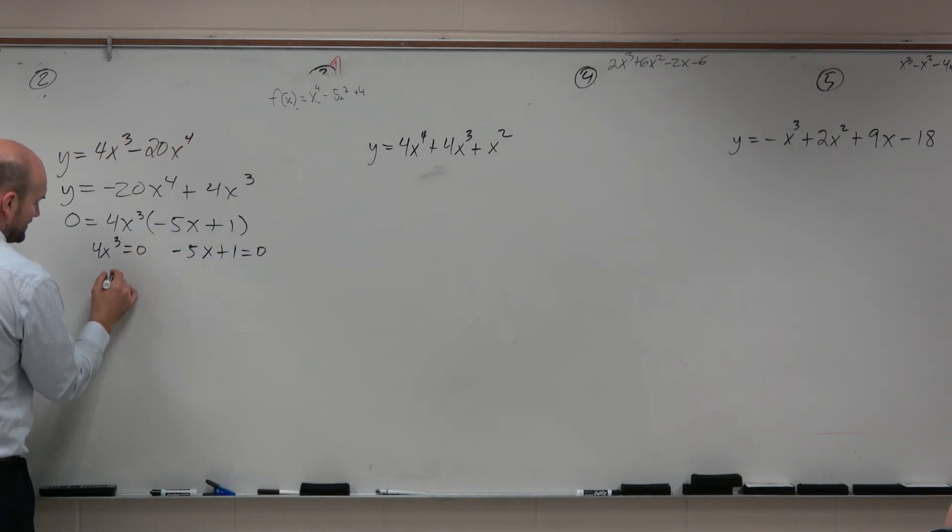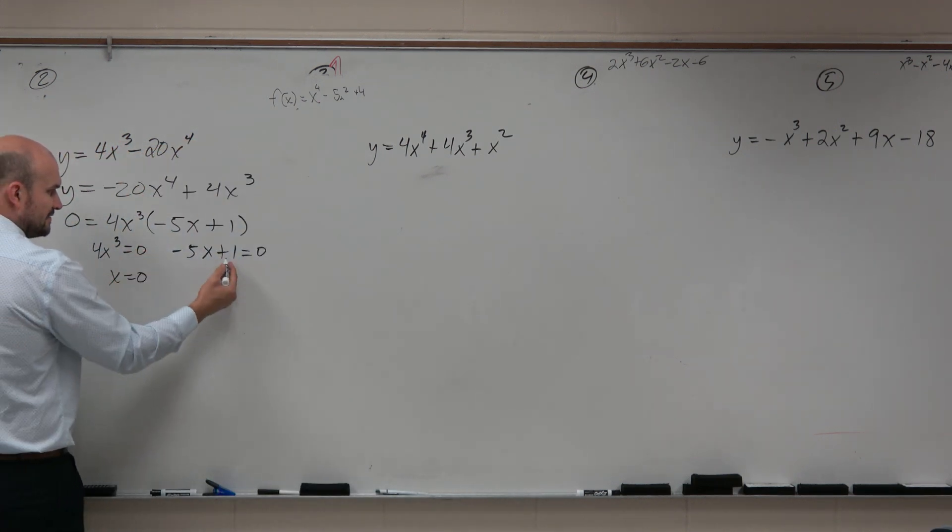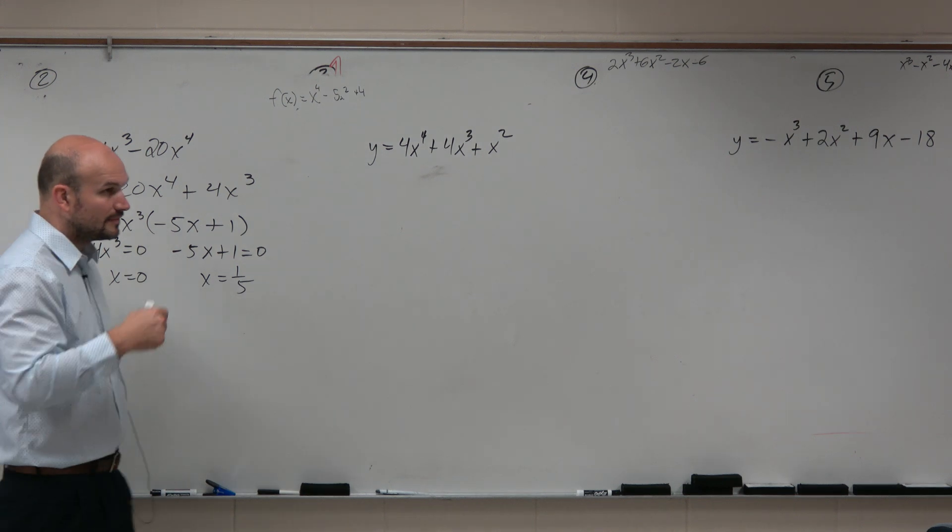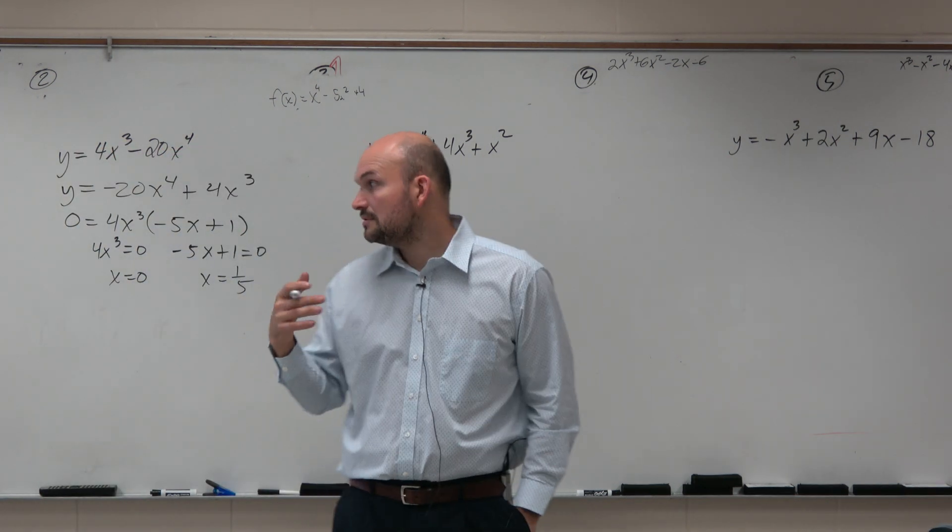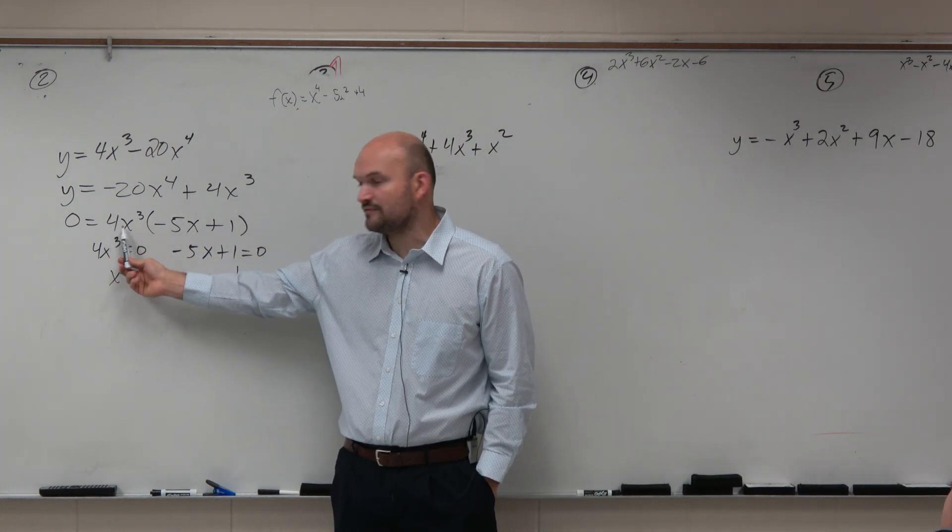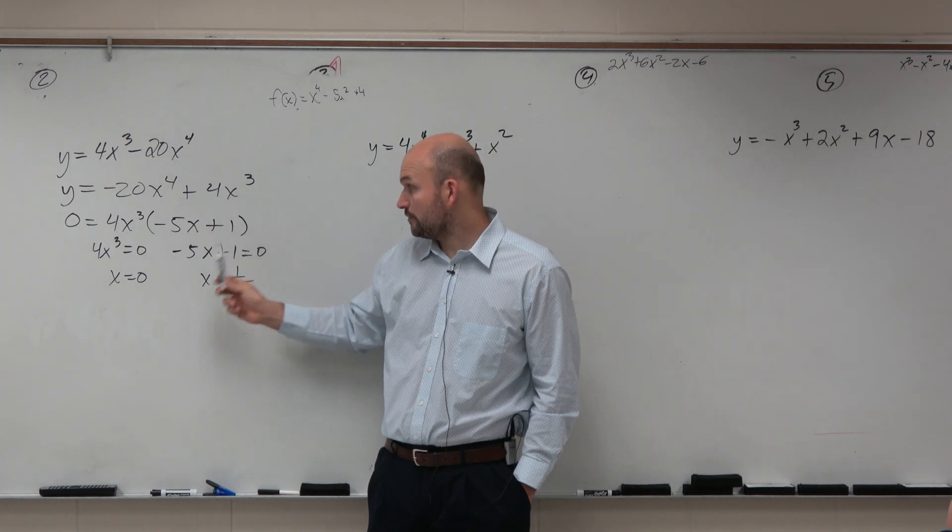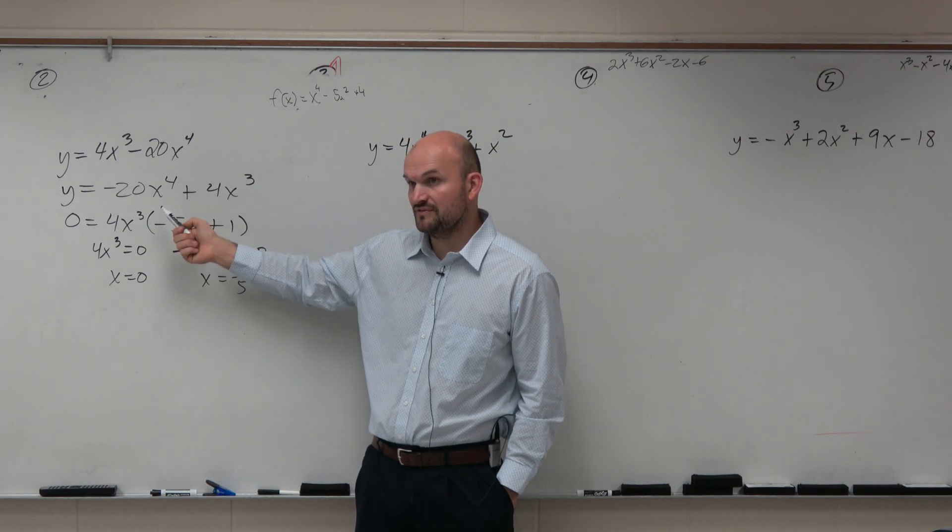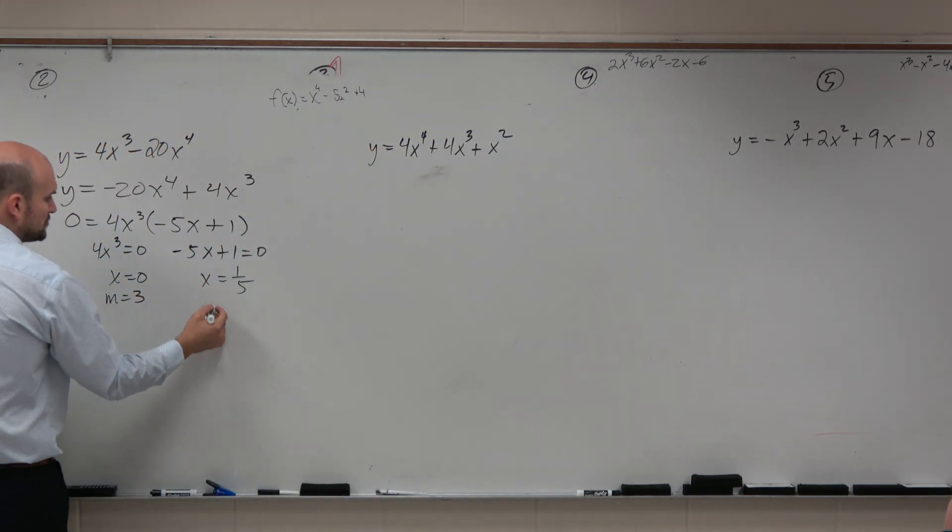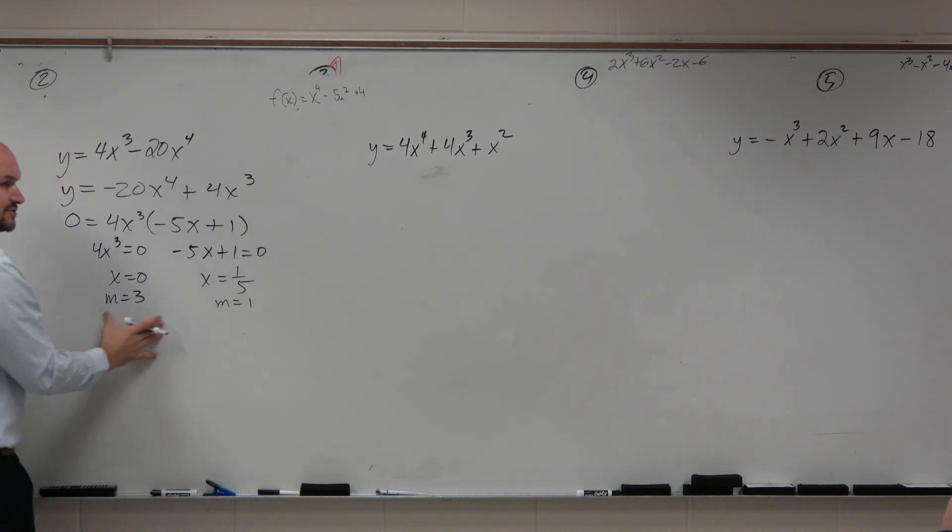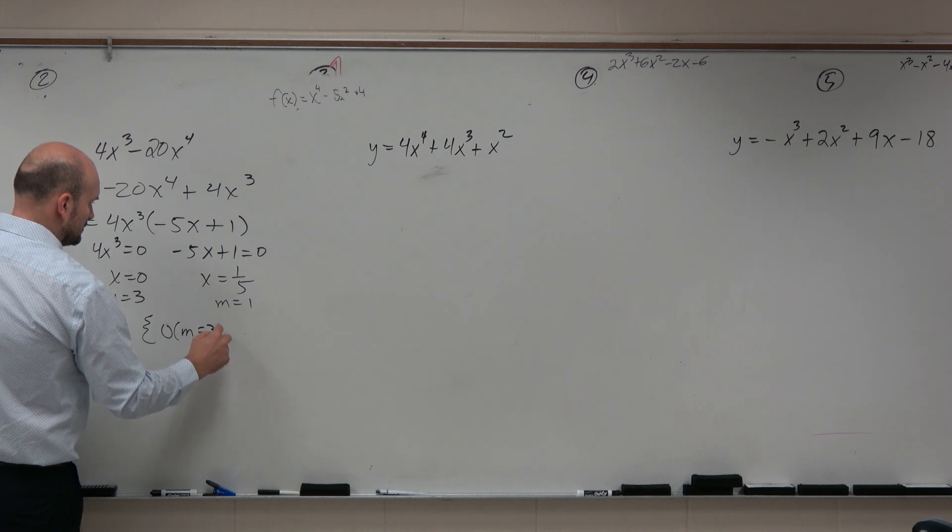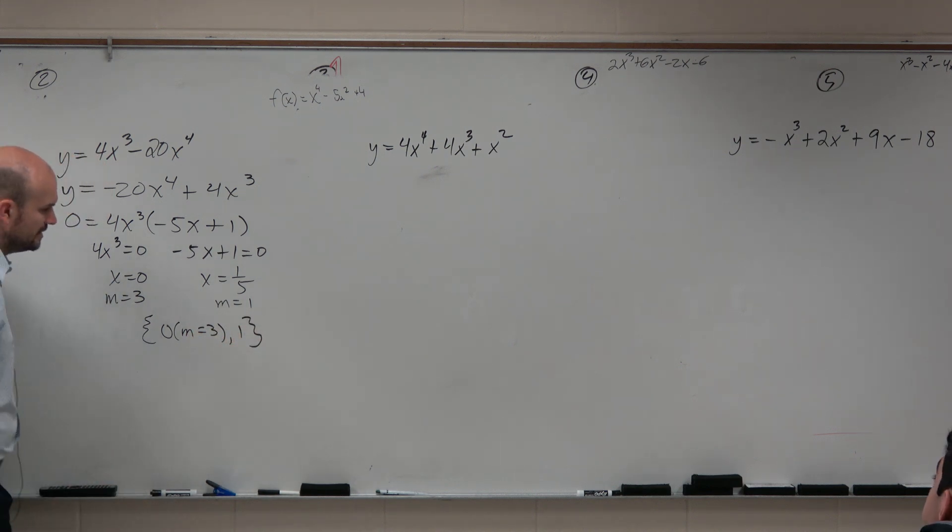And obviously, you could show your work here, but I think you guys would agree, you're going to get x equals 0. You could subtract 1, divide by -5, you're going to get x is equal to 1/5. Now, could I factor this any further from this point? No. So therefore, we could say this 0 has a multiplicity of 3, and this one has a multiplicity of 1. So we could just write it like that, or we could use set notation.